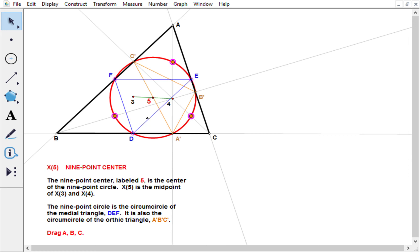And where are those points? Well, they're the midpoints between the orthocenter and the vertices. This point is exactly halfway between the orthocenter and A. And similarly, this one's halfway between the orthocenter and C, and this one's halfway between the orthocenter and B. And these three points also lie on the nine-point circle.